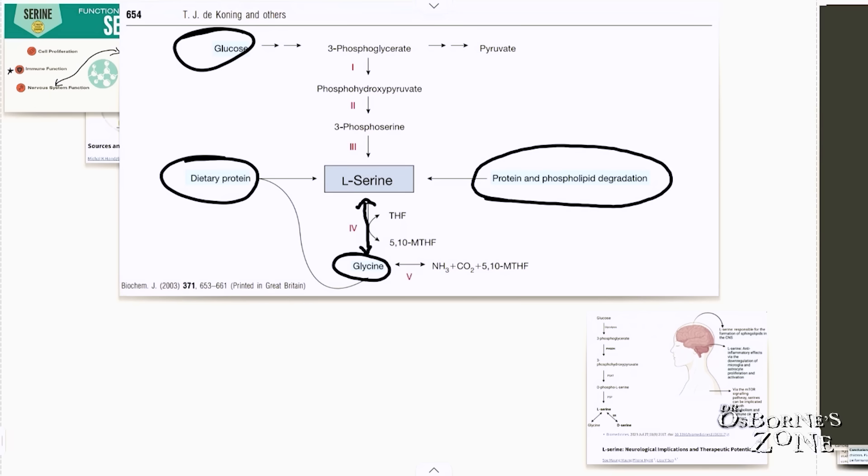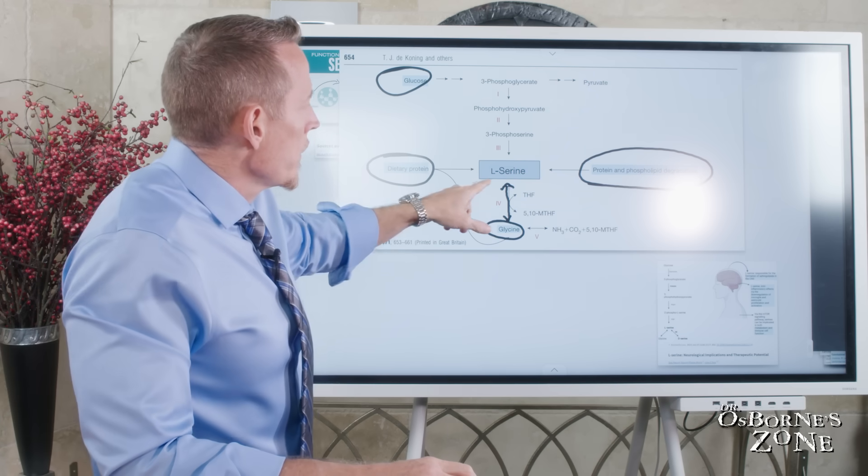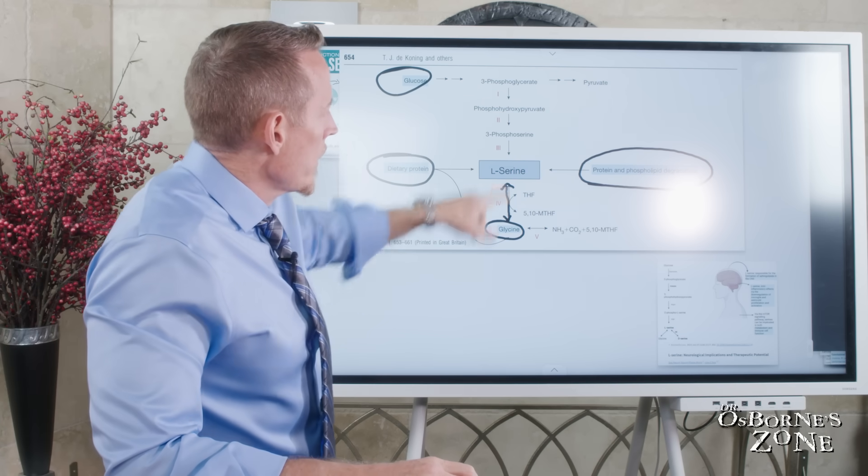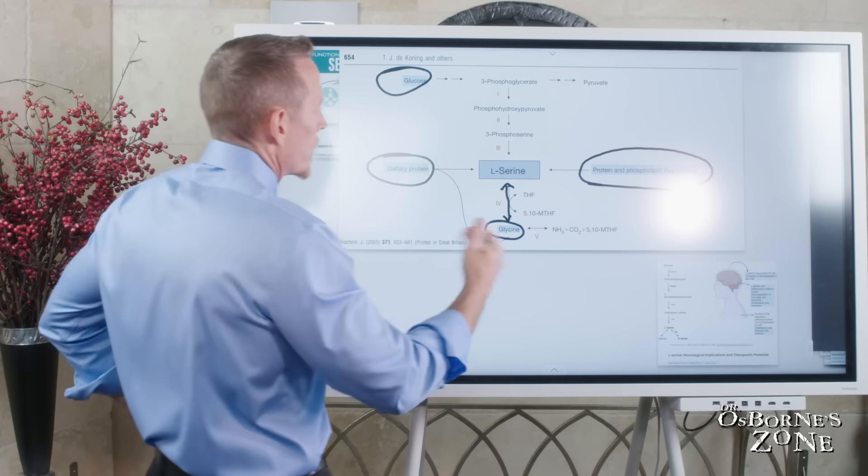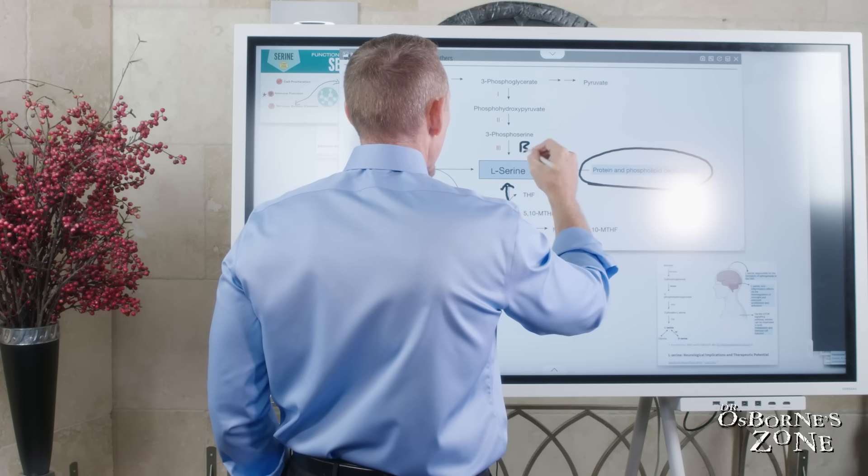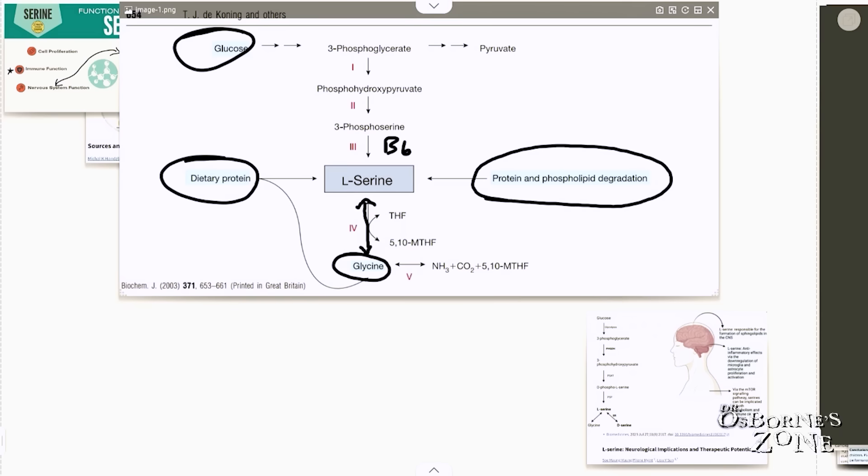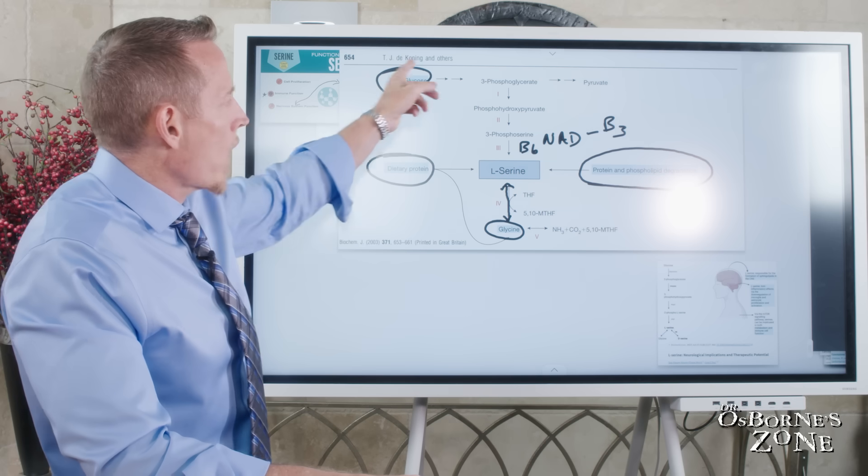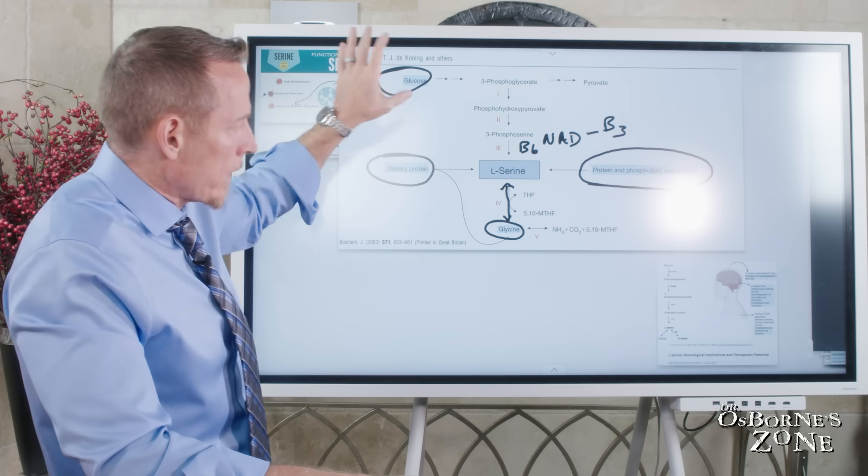When we're taking glucose and we're making serine, this pathway here requires vitamin B6, another one requires something called NAD. So in order for us to turn glucose into serine, you need B6 and then NAD is vitamin B3. So you can actually develop B3, B6 deficiencies that might lead to a poor production of serine from glucose.